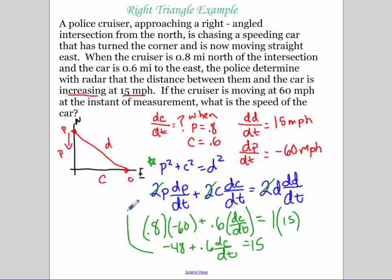I go through, I'm going to go up here and solve for dC/dt, which is going to end up equaling 105 miles per hour. Because I add the 48 over, then I divide by 0.6.